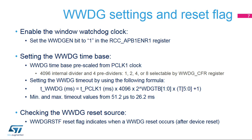To enable the window watchdog clock, set the WWDGEN bit in the RCC_APB1_ENR1 register. The window watchdog timebase is pre-scaled from PCLK1_APB1, whose maximum frequency can go up to 80 MHz. This clock frequency is first pre-divided by 4096, and the window watchdog pre-scaler can divide it again by 1, 2, 4, or 8, as defined in the WWDG_CFR register. The formula shown in the slide lets you determine the watchdog timeout, which is derived from the PCLK1 period and the WDGTB pre-scaler, as well as the selected watchdog counter reload value. The minimum and maximum timeout values can be between 51.2 microseconds and 26.2 milliseconds.